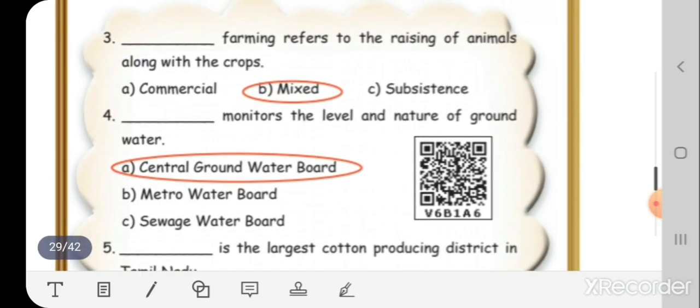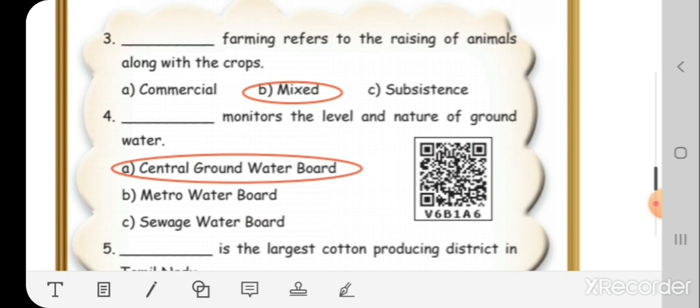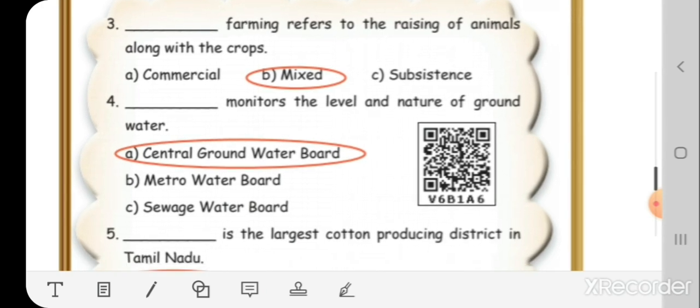Third one. Dash farming refers to the raising of animals along with the crops. Mixed farming.